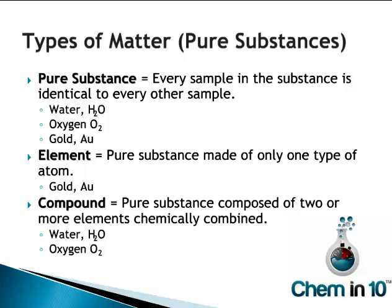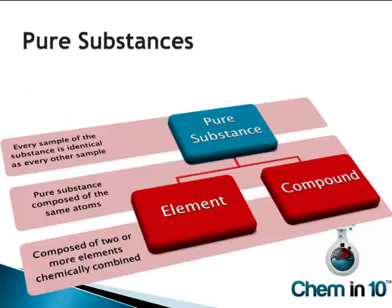Because they are chemically combined, I consider oxygen gas to be more of a compound, though some people will also call it an element. In summary, a pure substance is a substance in which every sample is identical to every other sample. A pure substance can either be an element or a compound. An element is a pure substance composed of the same atoms, whereas a compound is composed of two or more elements chemically combined.